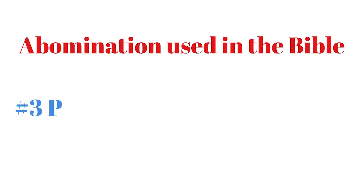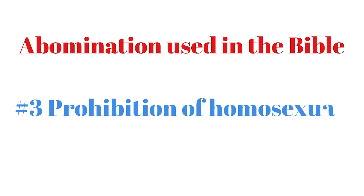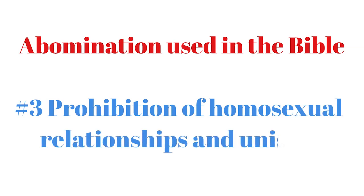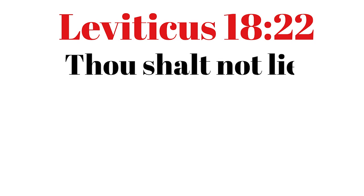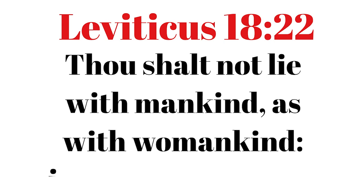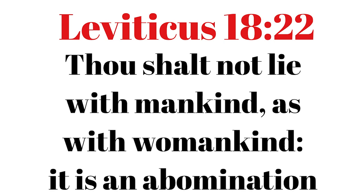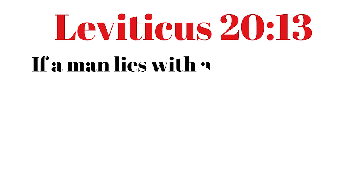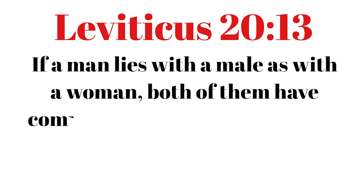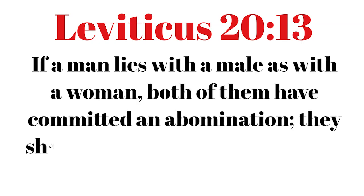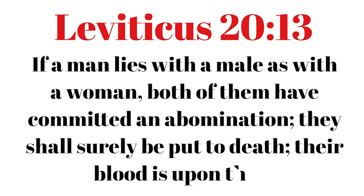Abomination used in the Bible, number 3: Prohibition of homosexual relationships. Leviticus 18:22 — Thou shalt not lie with mankind as with womankind; it is an abomination. Leviticus 20:13 — If a man lies with a male as with a woman, both of them have committed an abomination. They shall surely be put to death; their blood is upon them.